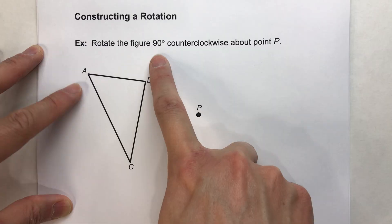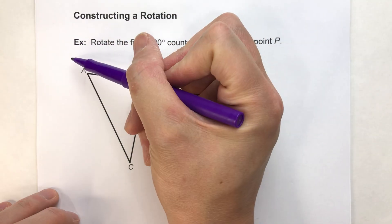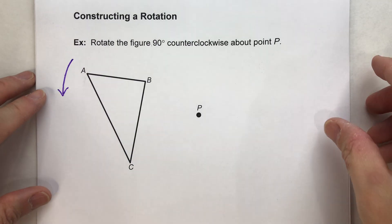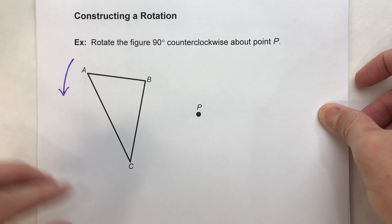We are going to be rotating this figure 90 degrees counterclockwise, so that's in this direction. I always like to put an arrow to remind me which way I'm going because it's easy to lose orientation when you're rotating.